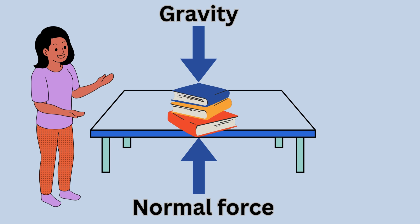The arrow shows the force of gravity pointing down. The table exerts an upward force on the book — this is the normal force. The arrow for the normal force points up. The two forces are in opposite directions. The two forces are equal, so the arrows are the same size.